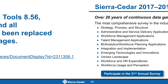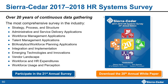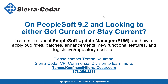Second, I want to be sure you know where to get the Sierra Cedar HR Systems Survey. It's free, so please visit www.sierra-cedar.com and click the HR Systems Survey at the top of the site to find out how to get a copy and participate in this year's survey. And finally, if you're already on PeopleSoft 9.2 and want to learn more about how to get and stay current using the PeopleSoft Update Manager — otherwise known as PUM — please contact Teresa Kaufman for more information.